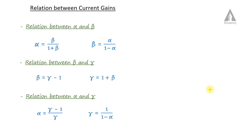Hi, in this lecture we are going to discuss about the relationship between the current gains — that is, the relationship between alpha, beta, and gamma. We know that alpha is the current gain of common base configuration, beta is the current gain of common emitter configuration, and gamma is the current gain of common collector configuration.